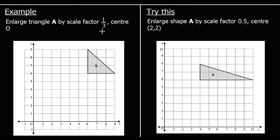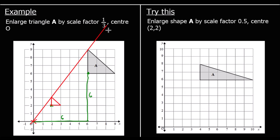We're enlarging the shape again. This time it's going to get smaller — the scale factor is a third, and the center is at the origin. The center of enlargement is at zero, zero. To get to the bottom corner it was along six, up six. The scale factor is one third, so divided by three — we're going along two, up two. That's the bottom of the new shape. It was three along and three up; a third of that is one along and one up. So that is our new triangle. If we join up the points, we can check that they all go back to the center of enlargement.